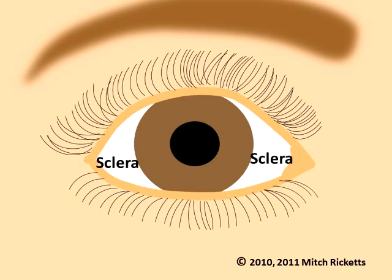The white of the eye is known as the sclera. The word sclera is based on a Greek root meaning hard. The sclera is a tough, fibrous layer that protects and supports the eyeball.